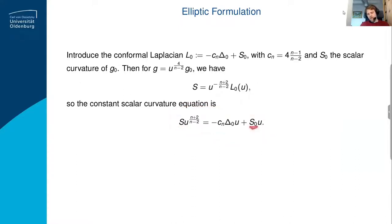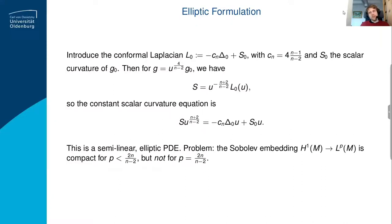Asking for the scalar curvature of g̃ to be constant means that a specific PDE has to be satisfied, where s is a constant, s₀ is the scalar curvature of the original metric, and u is the positive function you're trying to find. This is a semi-linear elliptic PDE. It's elliptic because of the Laplacian, and semi-linear because there are no factors of u multiplying the derivatives, but there is a nonlinear term. In the special case where s equals 0, it actually becomes a linear equation.